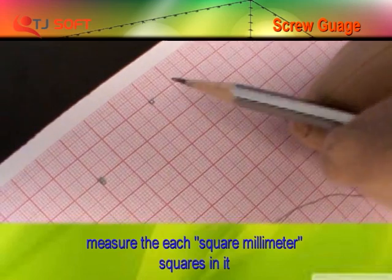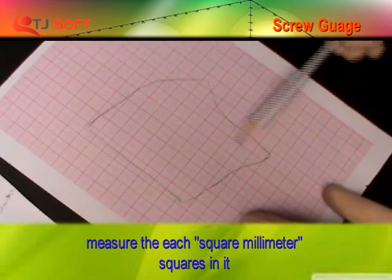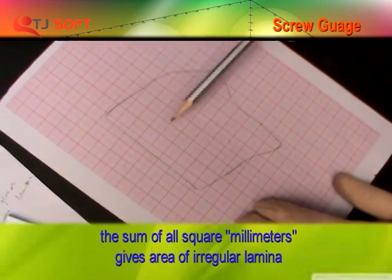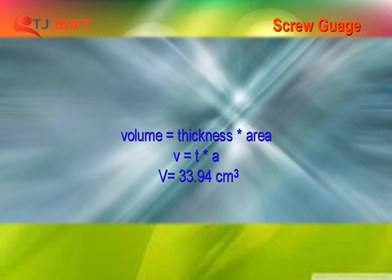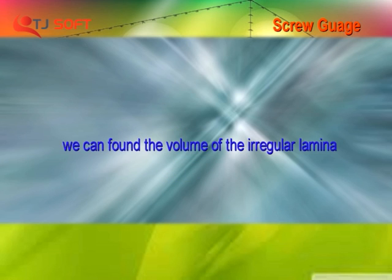Measure each square meter in it. The sum of all square meters gives area of irregular lamina. Volume is equal to thickness into area. V is equal to T into A. We found the volume of irregular lamina.